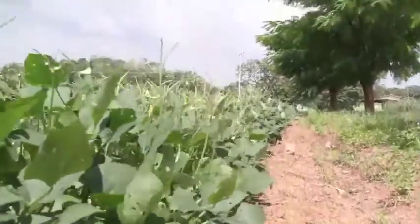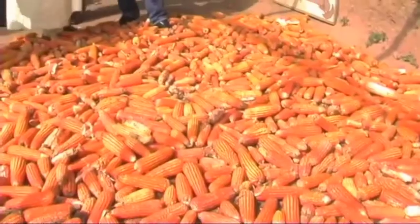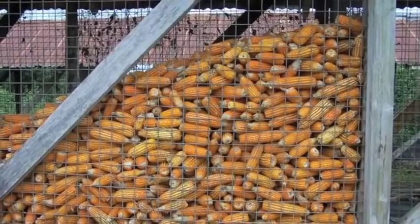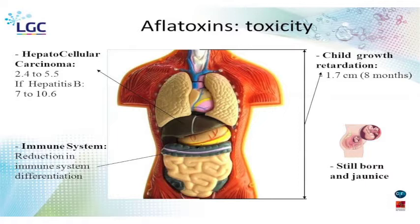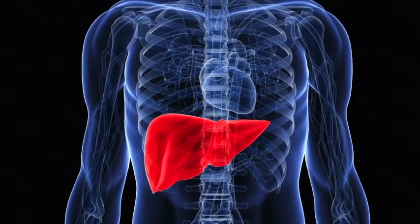Aflatoxin contamination can occur pre-harvest and post-harvest due to improper storage conditions. Aflatoxin contamination has severe health implications — diseases can arise, it can affect the liver and lead to death. Aflatoxins are toxins that can be injurious to health and should be avoided.